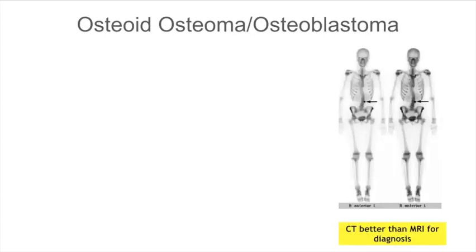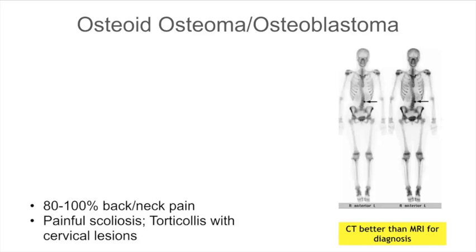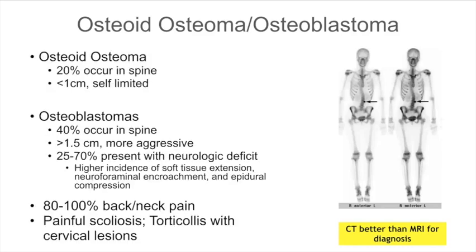Osteoid osteomas and osteoblastomas are more common in children. Classically, 20% of osteoid osteomas occur in the spine; they are small, less than one centimeter. Osteoblastomas are the larger ones, with a higher percentage (40%) in the spine and a more aggressive nature. Symptoms include axial pain in the neck, thoracic, or low back region.